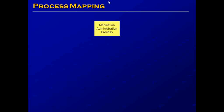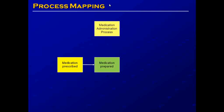We can begin with a high-level process map for the medication administration process. The first step: the medication is prescribed. The second step: the medication is prepared. And the third step: the medication is given. A process map that is only three boxes at this high level isn't going to be much help, so we're going to add more detail to each of these three steps.